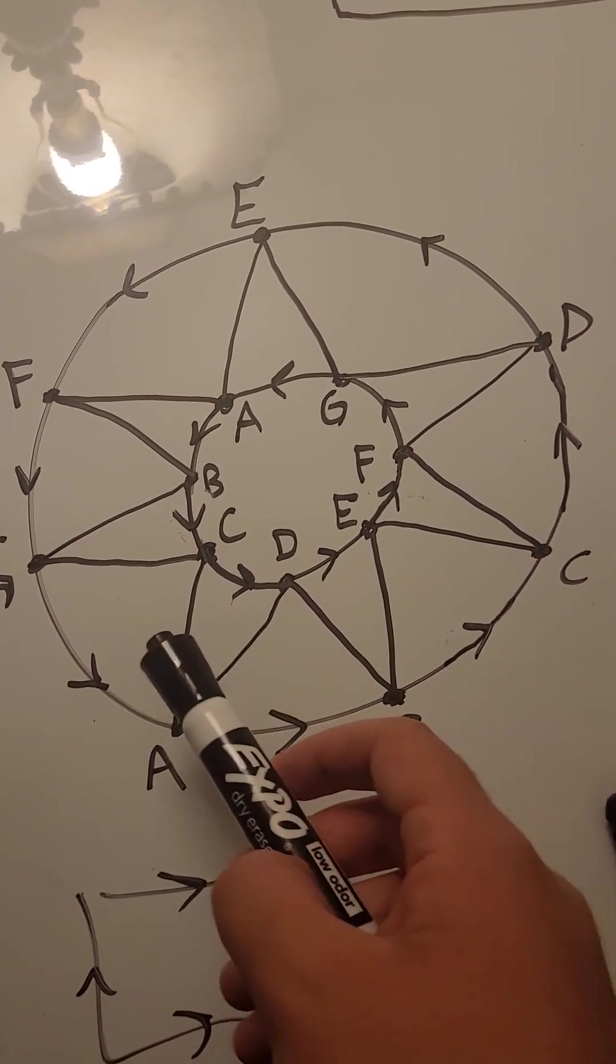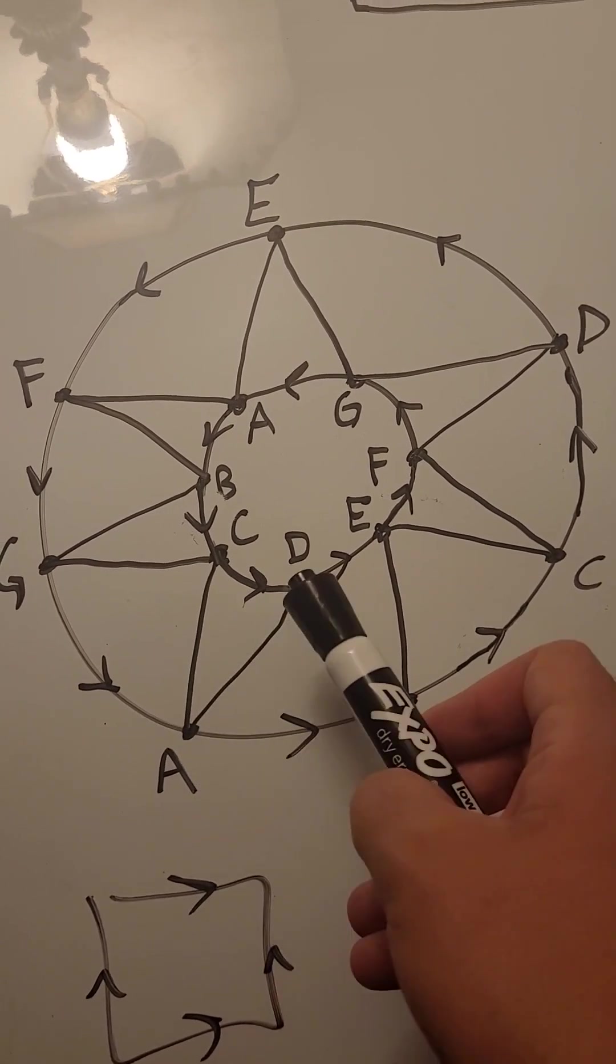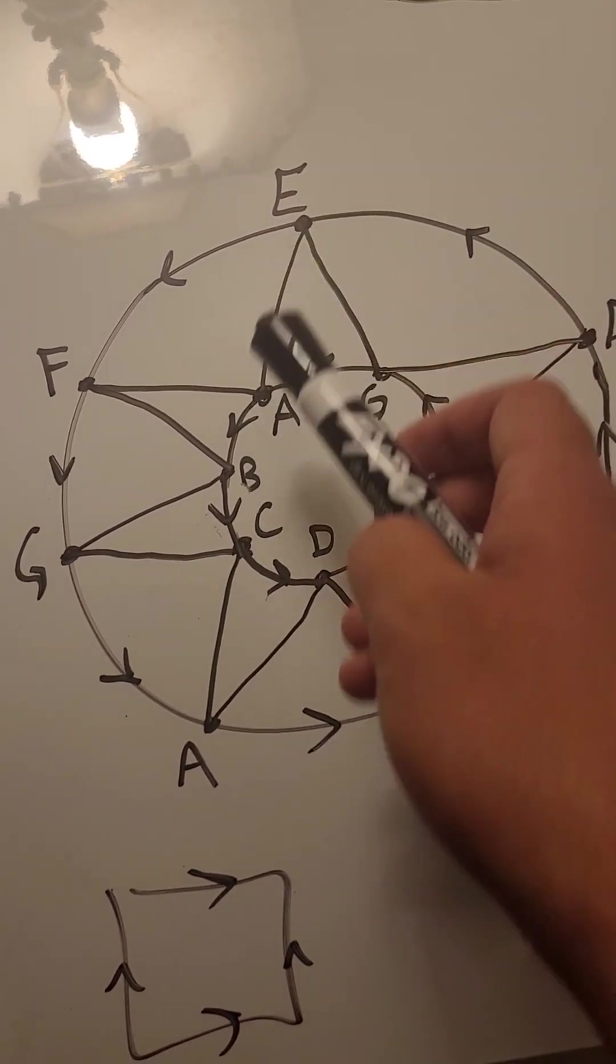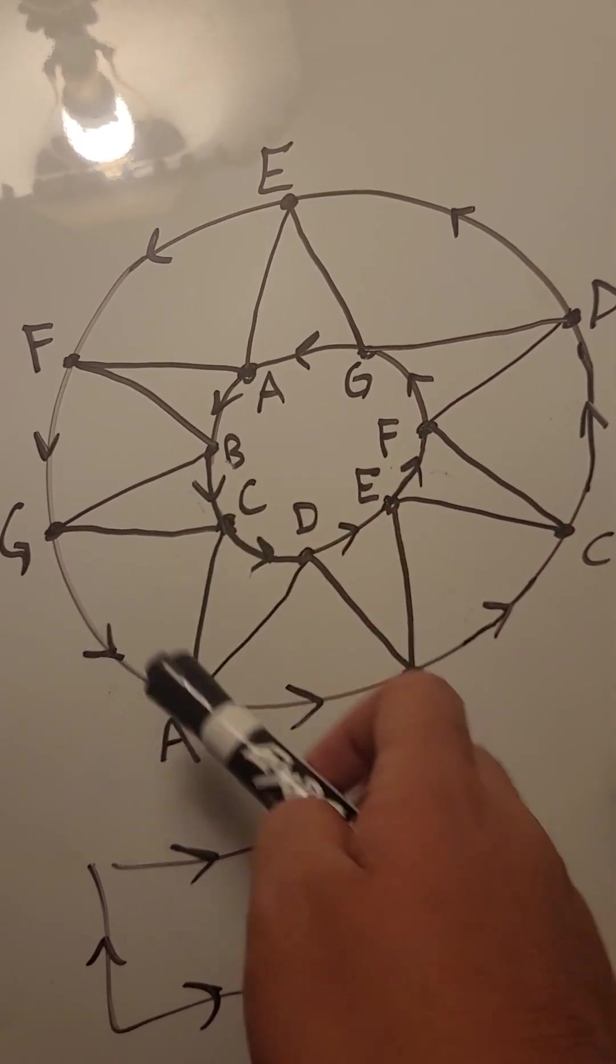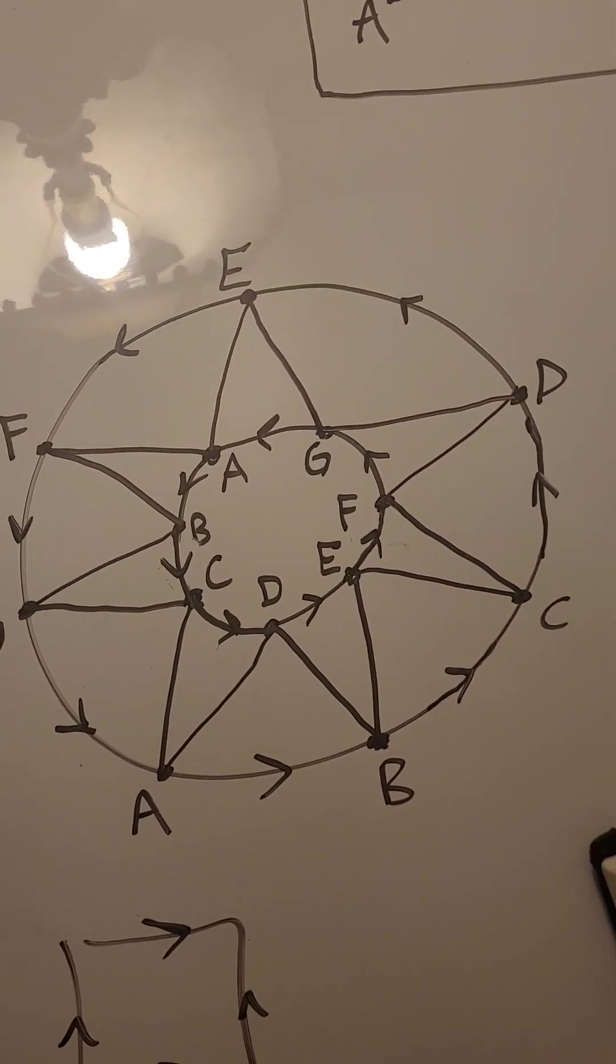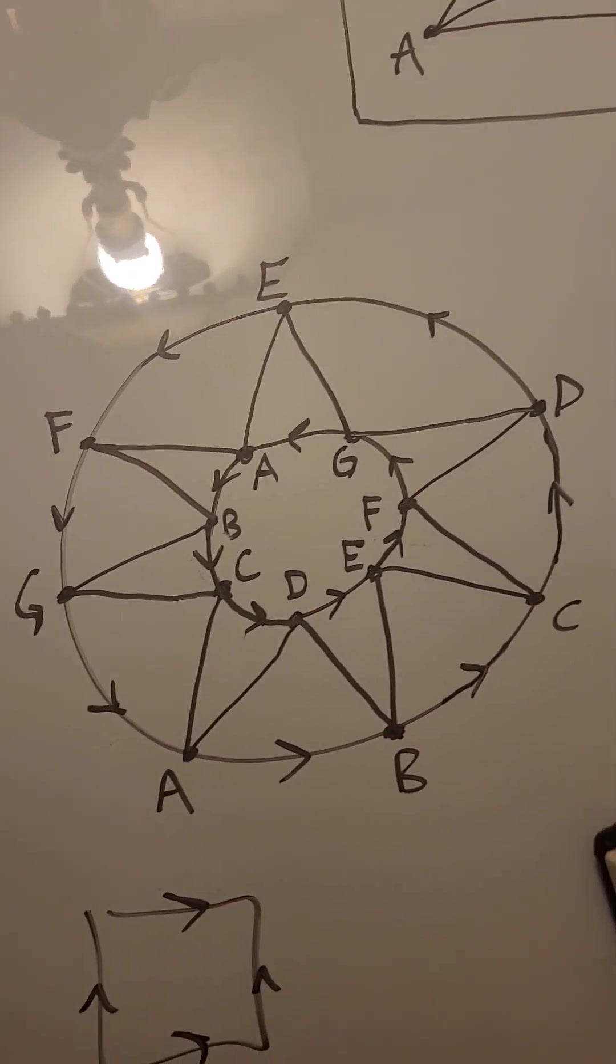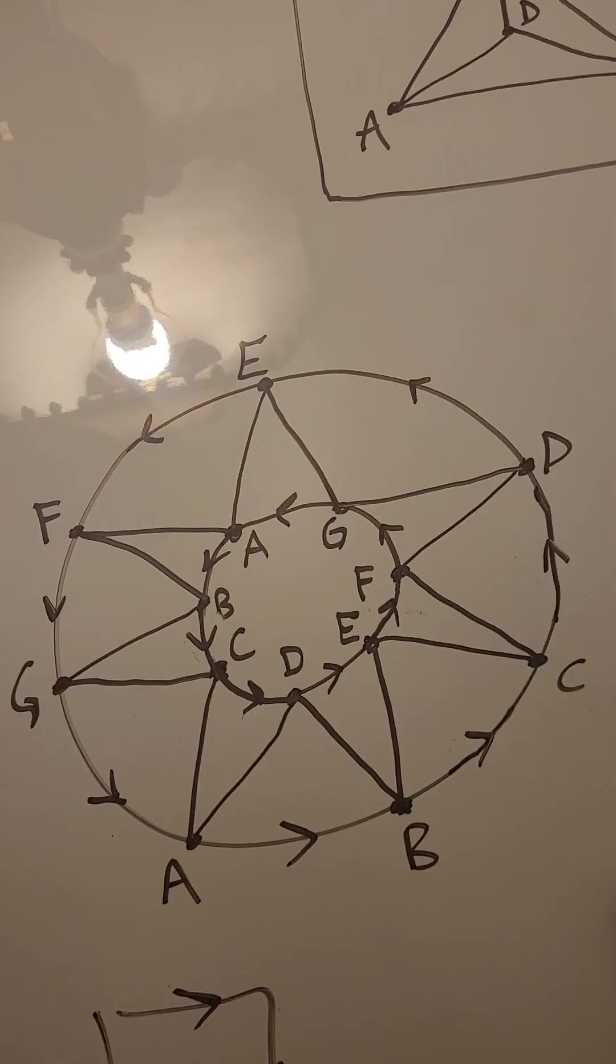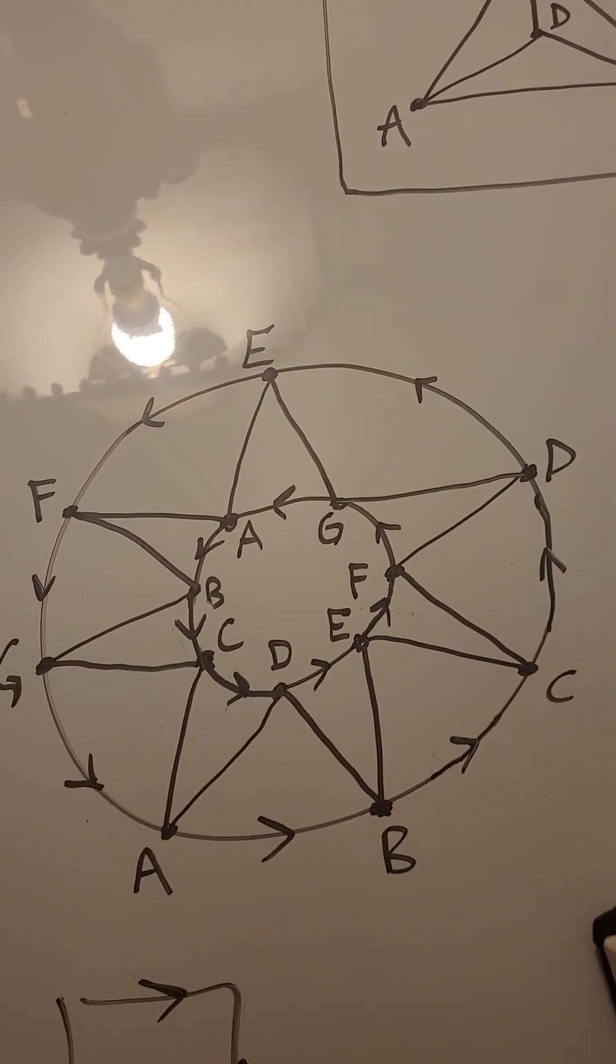As you can see, A connects to B, A connects to C, A connects to D, A here connects to E, A connects to F, and A connects to G. There we go. It's the complete graph of seven vertices. There's no need to show anything else because it's obvious you can just rotate it and it'll just be the same graph.